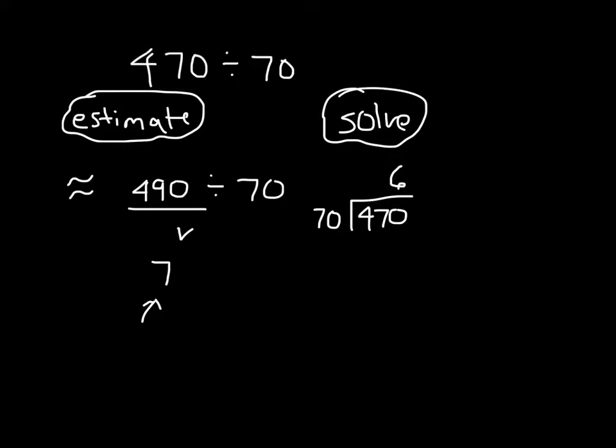So we'll use 6 instead. Notice the 6 goes right over the 1's place there, over that 0. And then we have 6 times 70 equaling 420. 470 minus 420 is 50. So our remainder is 50. 50, that remainder, is not enough to have another group of 70.